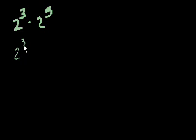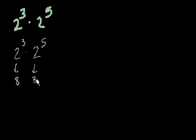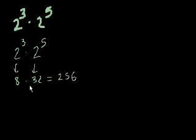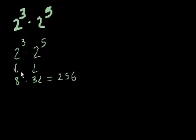So 2 to the third times 2 to the fifth. There's one way you do know how to do it: you could figure out that 2 to the third is 8, and that 2 to the fifth is 32, and then multiply them. 8 times 32 is 256. You could do it that way, and that's reasonable. But if those were much larger numbers, this method might become a little difficult. So I'm going to show you that using exponent rules, you can actually multiply exponential numbers without having to do as much arithmetic.